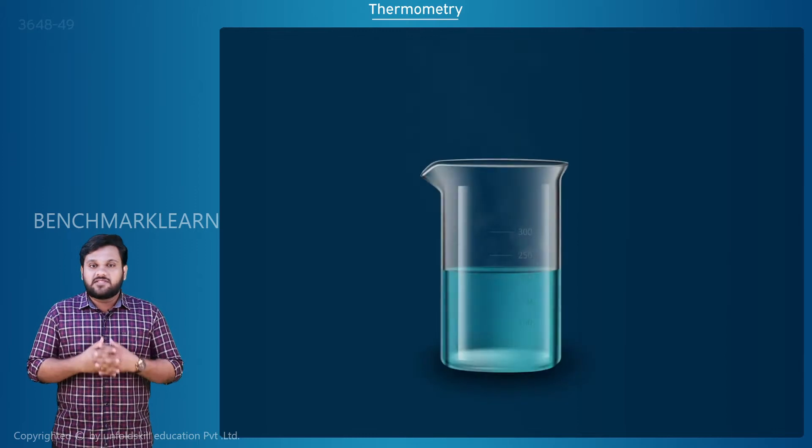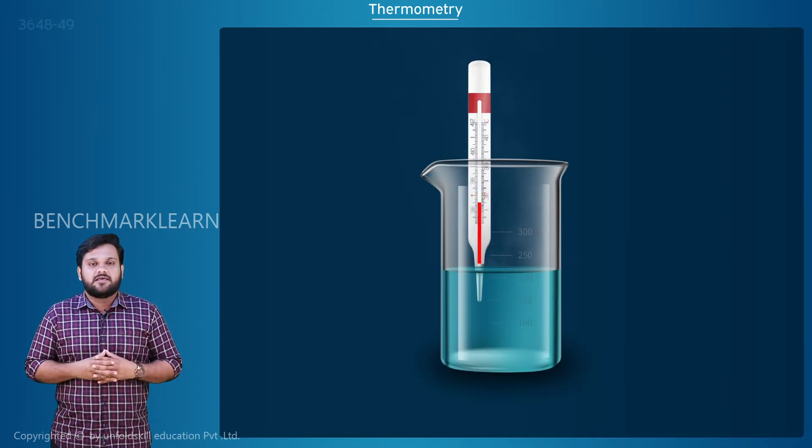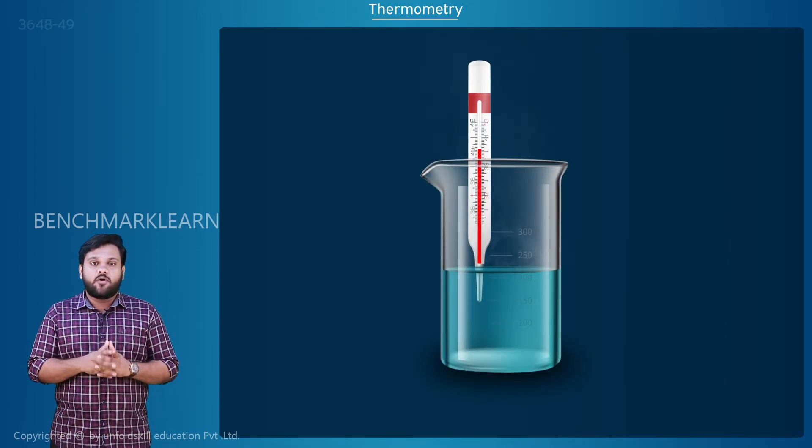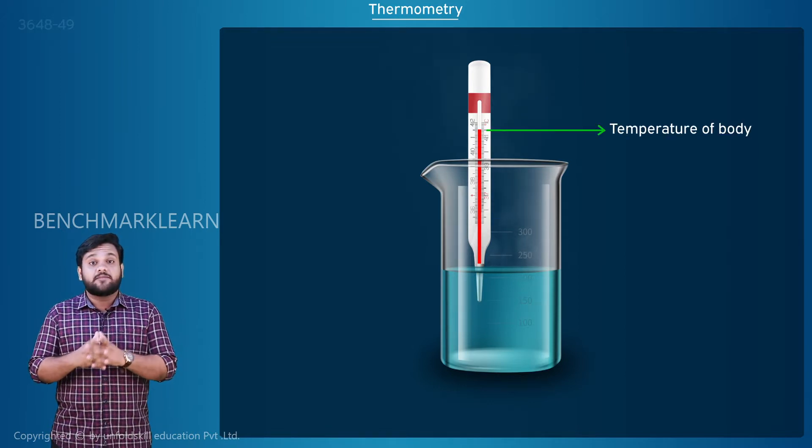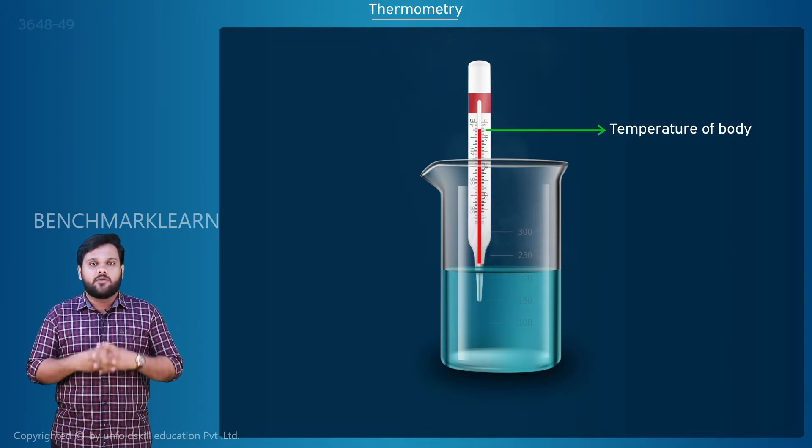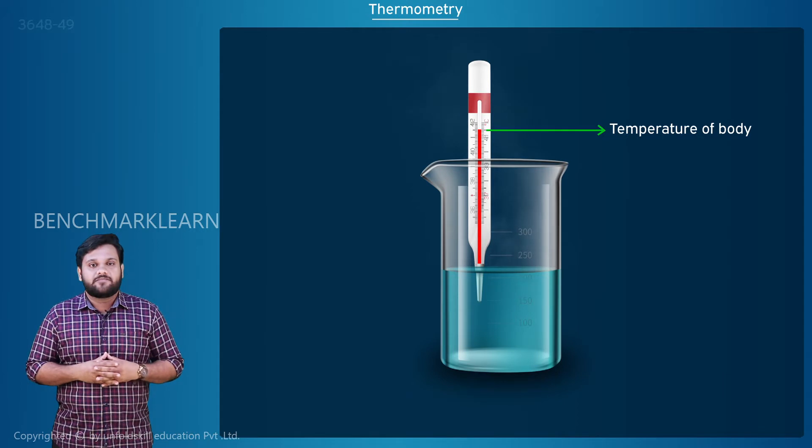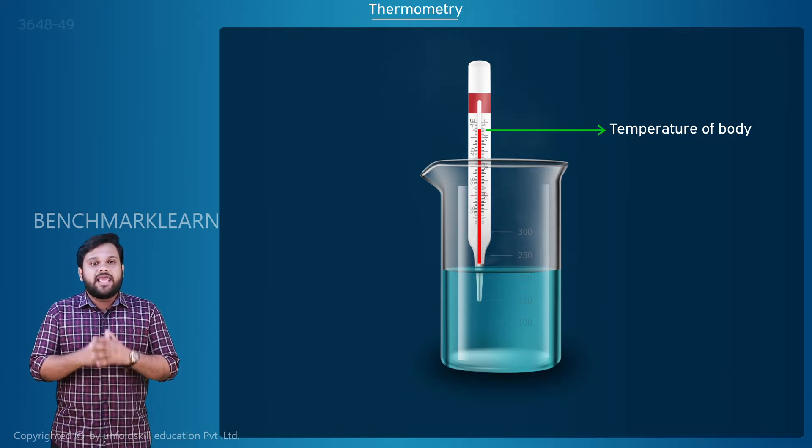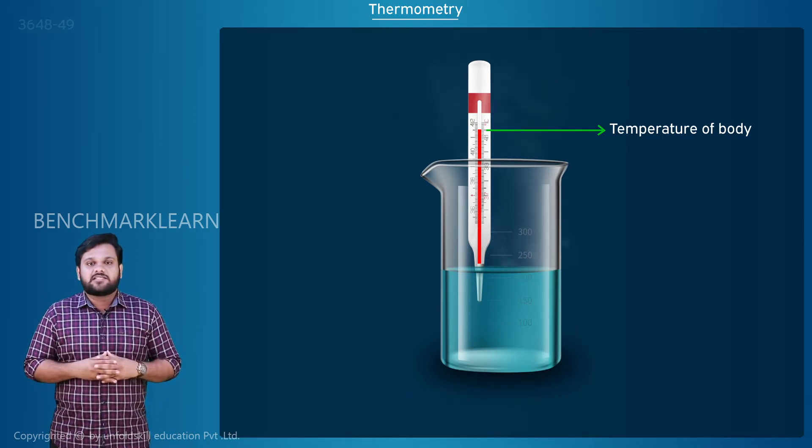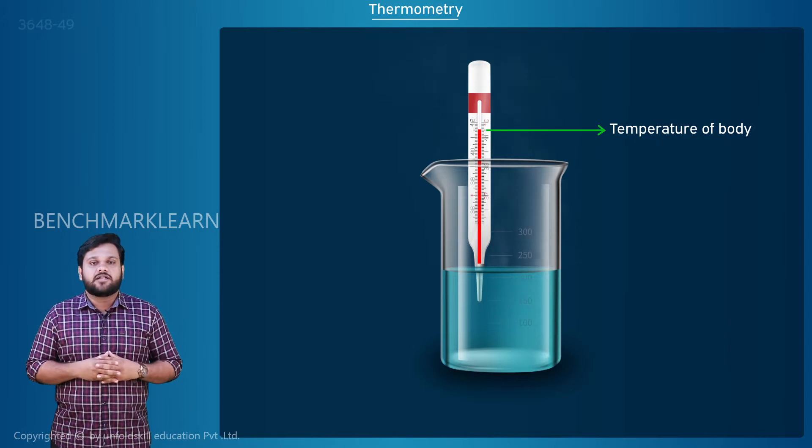When a hot body is in contact with a thermometer, heat flow occurs from the body to mercury until the temperature of mercury becomes equal to the temperature of the body. Meanwhile, the mercury expands. This thermal expansion is directly proportional to the temperature.